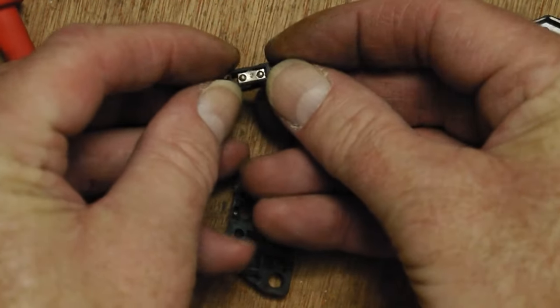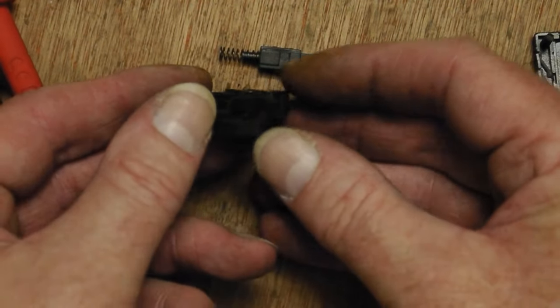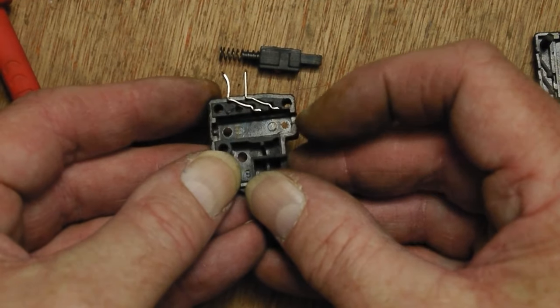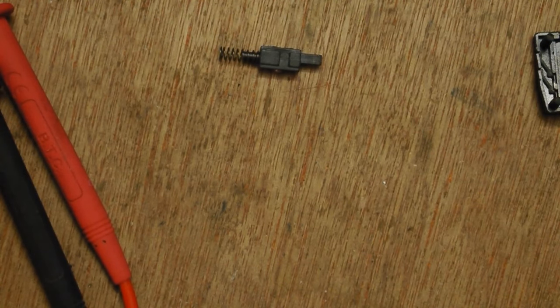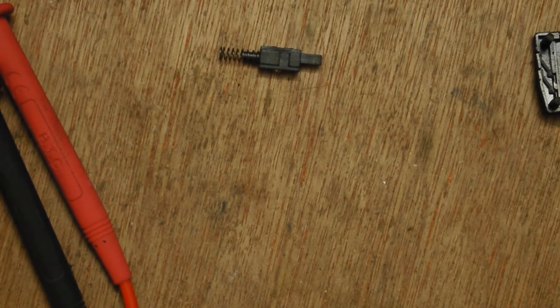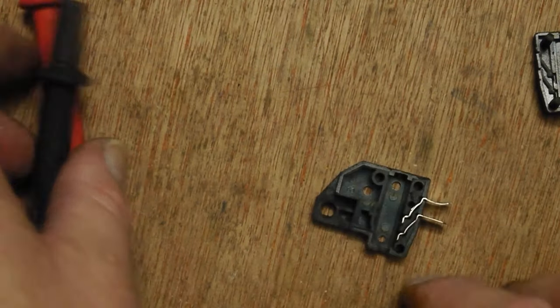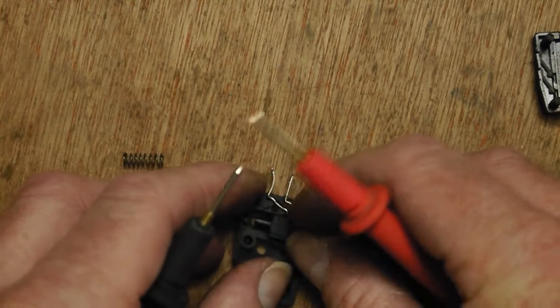The contacts worn down? Not really. You can see them there. They look fine. The contacts don't look too bad either. What is going on? Why isn't it working? I wonder if I can bend those contacts up a bit. Let's check this. No, it's still working. Let's take the spring off. I don't want to lose it.